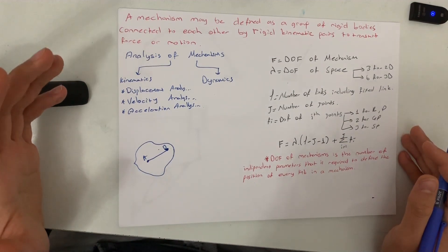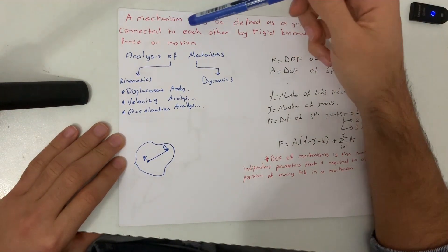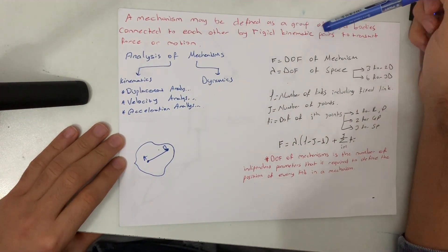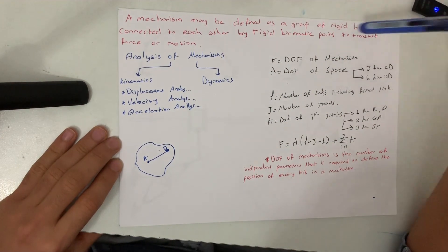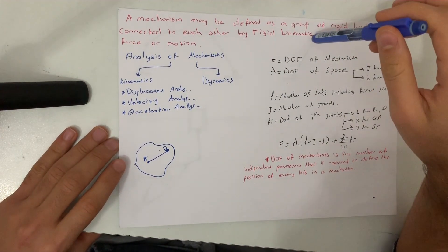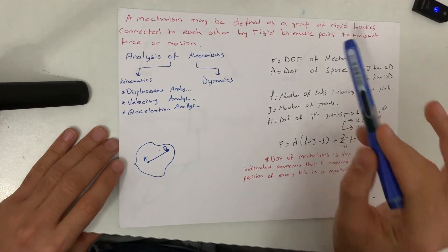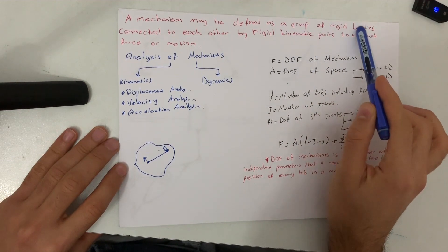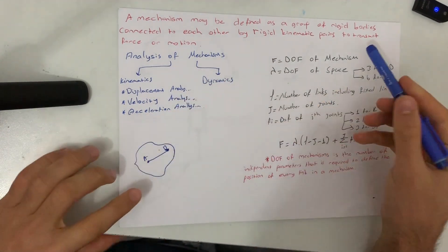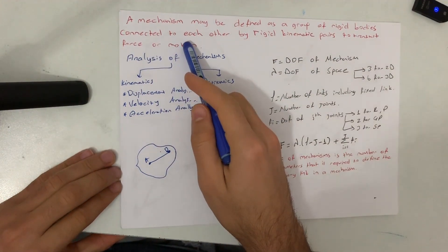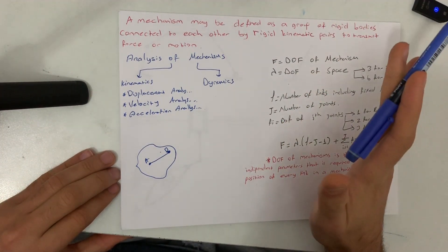Firstly, we should define a mechanism — what does that mean? A mechanism may be defined as a group of rigid bodies connected to each other by rigid kinematic pairs to transmit force or motion. This definition is really important: a group of rigid bodies should be connected to each other by rigid kinematic pairs to transmit force or motion.